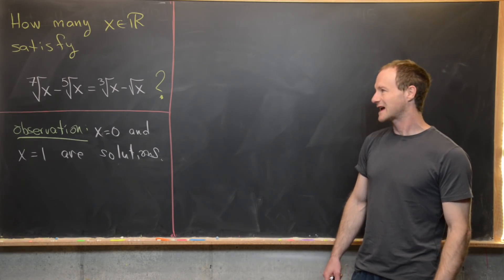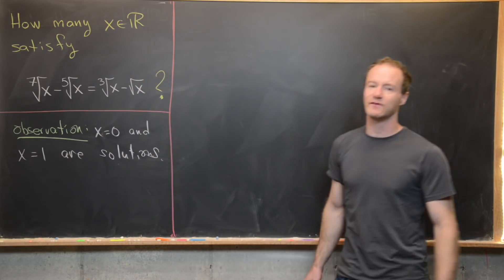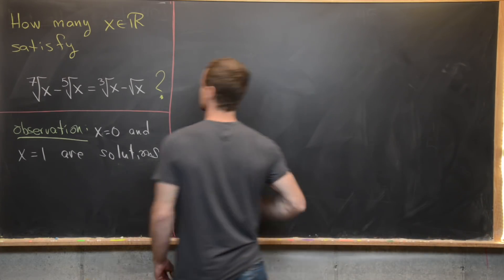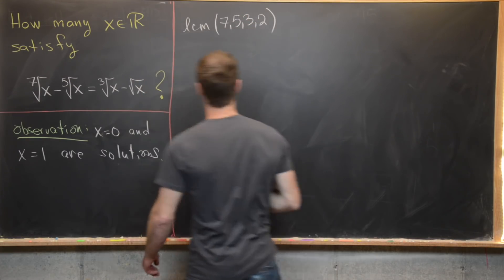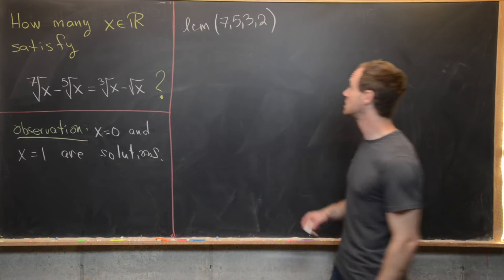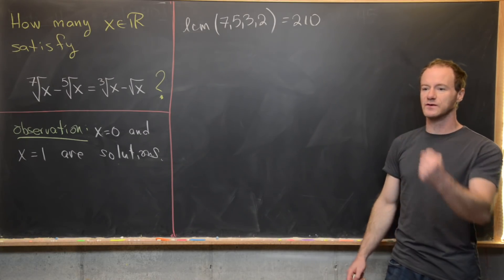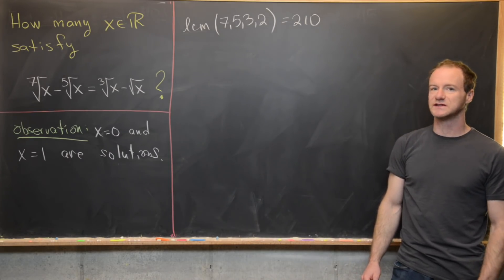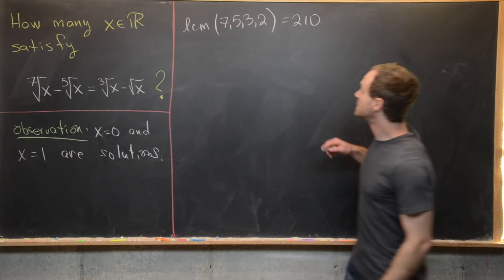We'd like to set x equal to some monomial so that the square root, cube root, fifth root, and seventh root are all non-radical. So let's look at the least common multiple of 7, 5, 3, and 2. Since those are relatively prime, the LCM is their product, which is 210. We could set x equal to a new variable raised to any common multiple of 7, 3, 5, and 2, but we may as well take the least common multiple.